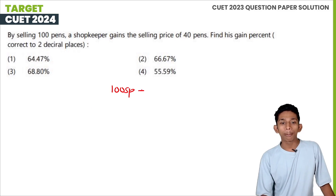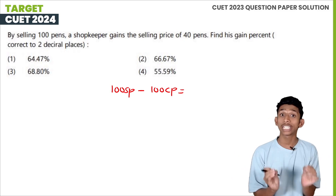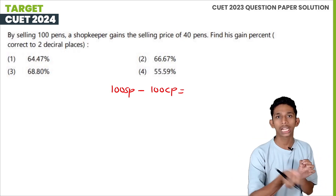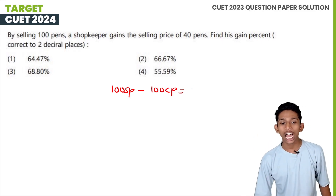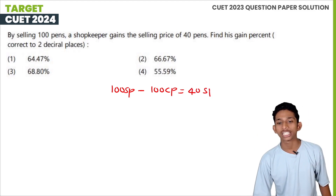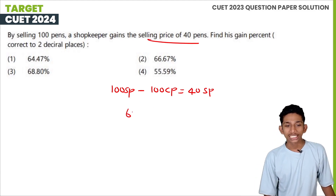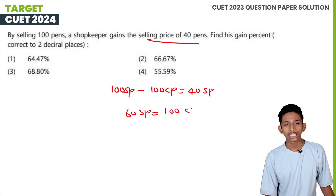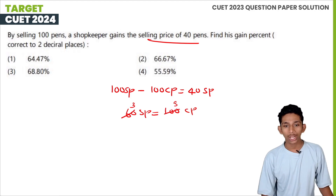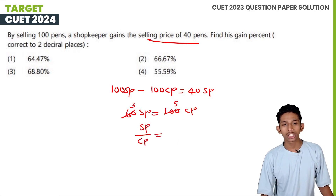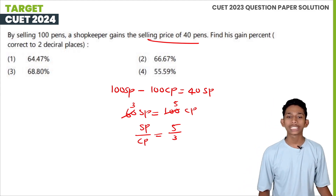Gain = 100 SP − 100 CP = 40 SP. So 100 SP − 40 SP = 100 CP, meaning 60 SP = 100 CP. Therefore SP/CP = 100/60 = 5/3.